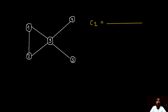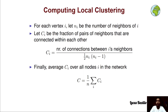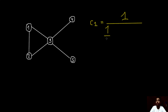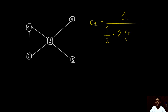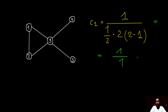The neighbors of node 1 are nodes 2 and 3, and there is only one connection between them. So the numerator is 1. On the denominator, we have one half multiplied by the number of neighbors of node 1, which is 2, multiplied by 2 minus 1. This gives us one half times 2 times 1, which equals 1. So the local clustering coefficient of node 1 is 1.